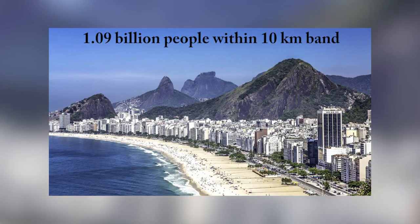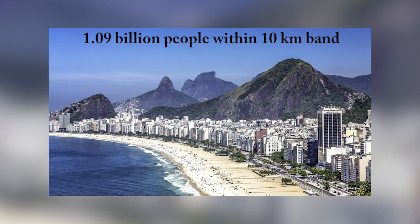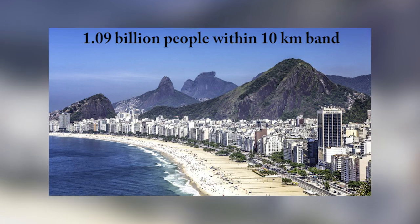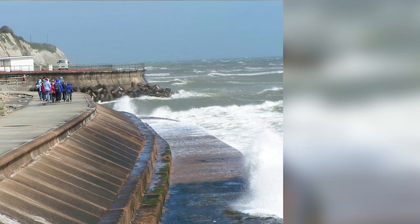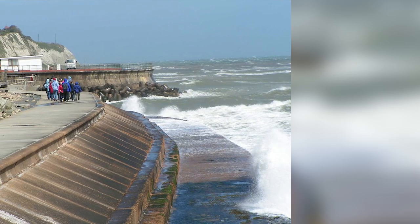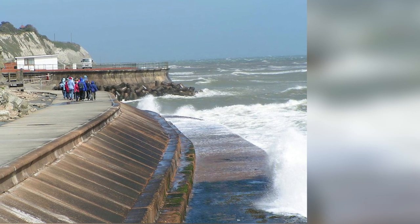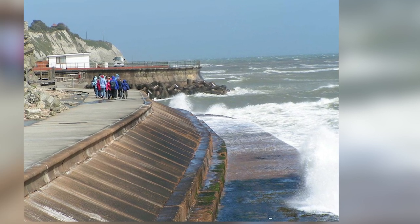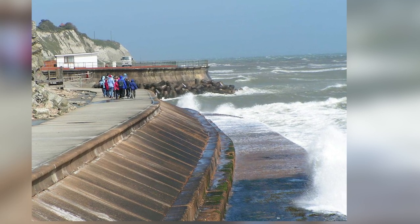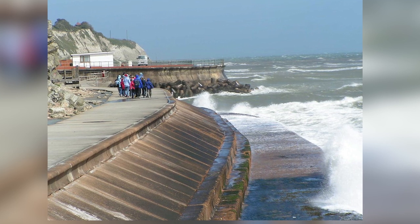So our coastlines have changed over vast periods of time. But what is different today is that we humans are here. Approximately 1.9 billion people live within a 10 kilometre band along the shore, and in occupying the coastline, we have changed it to suit our needs, which will make it extremely difficult for our coastlines to adapt to the rise in sea level.